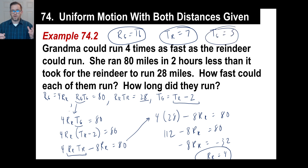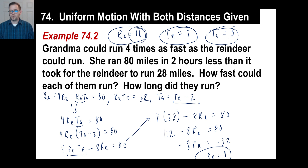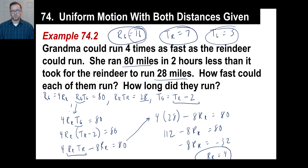Let's check: grandma runs 80 miles in two hours less, so in five hours at 16 miles an hour — 16 times five is 80 miles. The time of the reindeer is seven, the rate of the reindeer is four — four times seven is 28 miles. We got it.